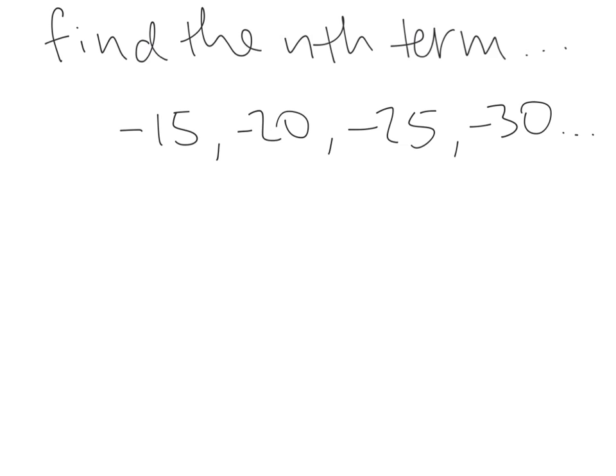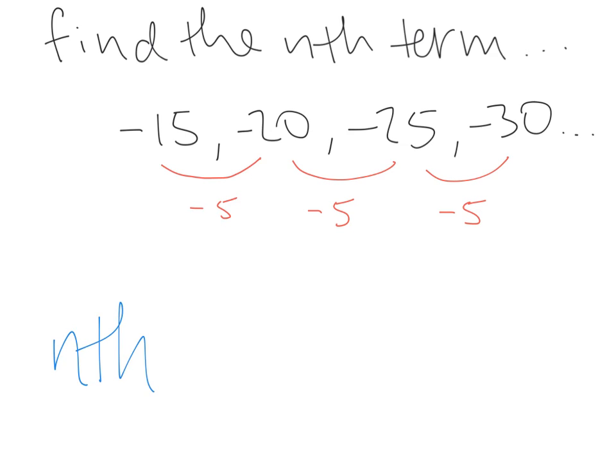Now find the nth term of the sequence -15, -20, -25, -30. We find the difference between each term: from -15 to -20 we minus 5, from -20 to -25 we minus 5, and from -25 to -30 we minus 5. It is definitely an arithmetic sequence. So we write the first difference, -5, and stick on an n: -5n.